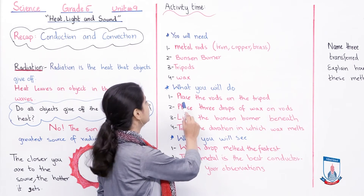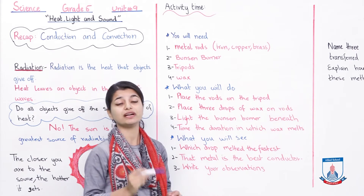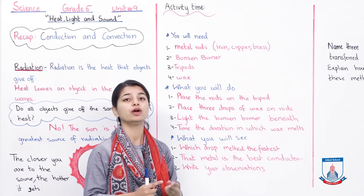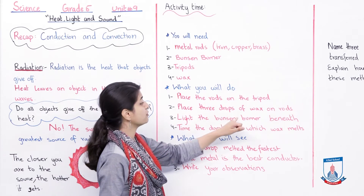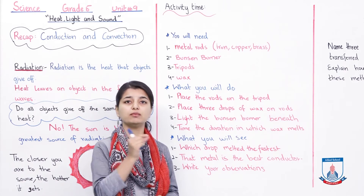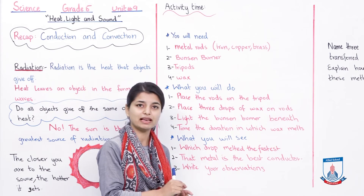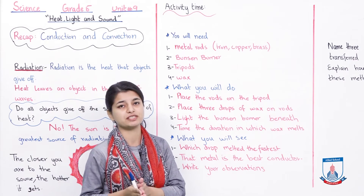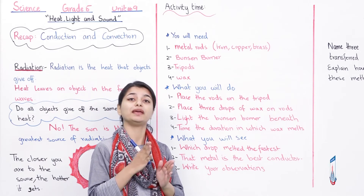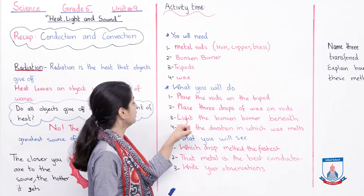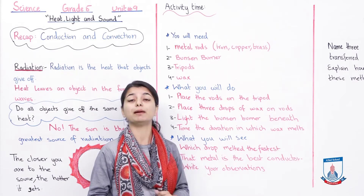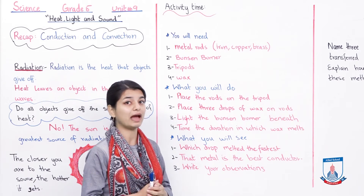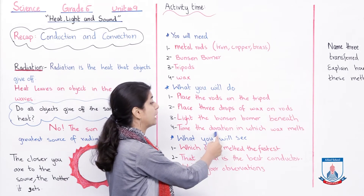Now let me tell you what you have to do for this experiment. In the first step, place the rods on the tripod — you have an iron rod, a copper rod, and a brass rod; place all of them on the tripod. Then in step two, place three drops of wax on the rods — one drop on the iron rod, one on the copper rod, and one on the brass rod — at exactly equal distances, for example at the tip of each. Then in step three, light the bunson burner beneath all three rods. Then time the duration in which the wax melts.